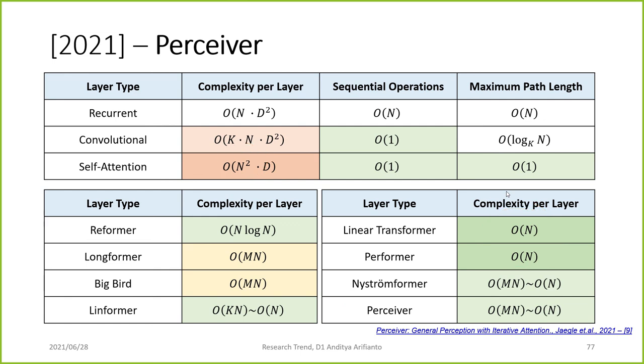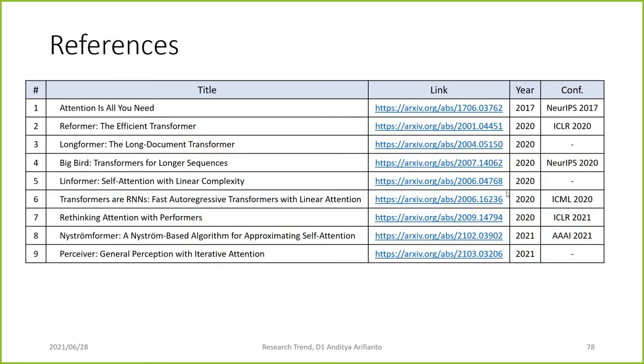In summary, the research trend in transformer complexity progresses from RNNs and CNNs through vanilla self-attention (O(n²)), to Reformer (O(n log n)), Longformer and BigBird (O(m·n), questionable), Linformer (O(n) to O(n log n)), Linear Transformer (O(n)), Performer (O(n)), Nyströmformer (O(n·m)), and finally Perceiver (O(n·m)), achieving approximately linear complexity. That's all for this research trend introduction.